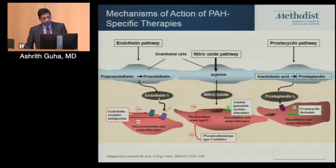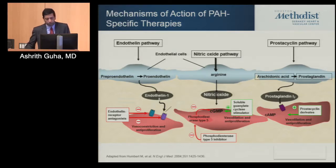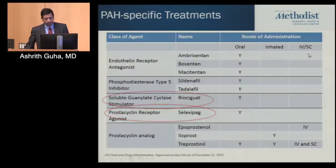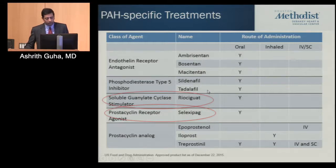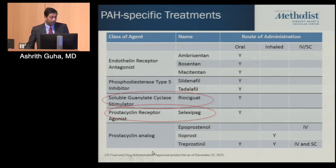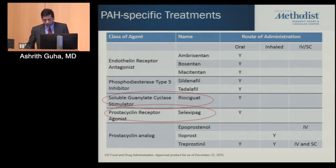For disease-specific therapies, there are three pathways targeted to decrease pulmonary vascular resistance and improve RV function: the endothelin pathway, the nitric oxide pathway, and the prostacyclin pathway. Newer medications include macitentan in the ERA category, oral treprostinil and the prostacyclin receptor agonist selexipag in the prostacyclin category, and riociguat — a soluble guanylate cyclase stimulator acting on the nitric oxide pathway. From being an orphan disease with one medication, we now have about 13 medications to choose from.